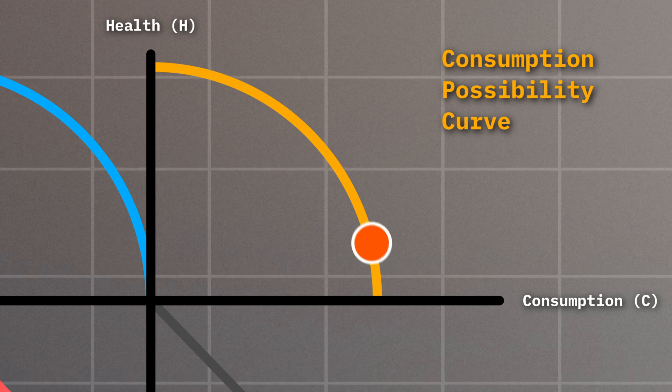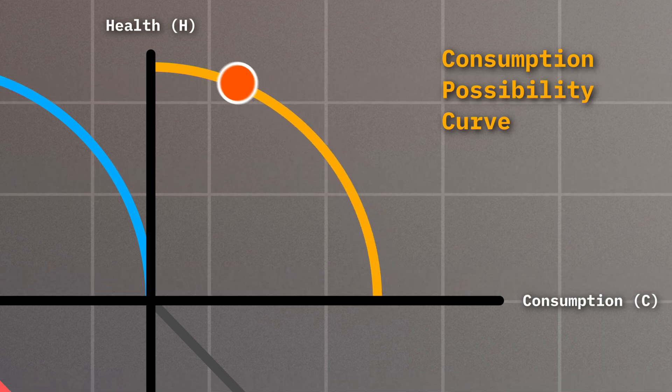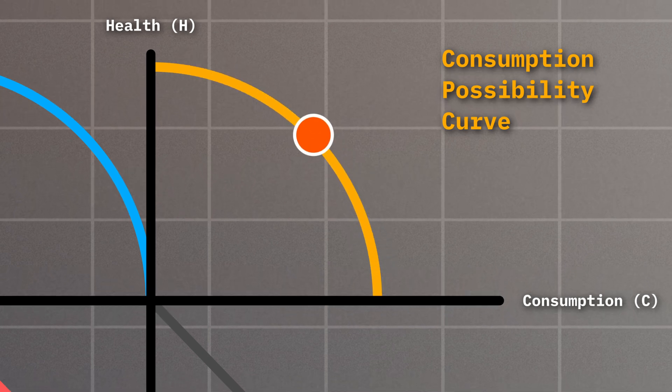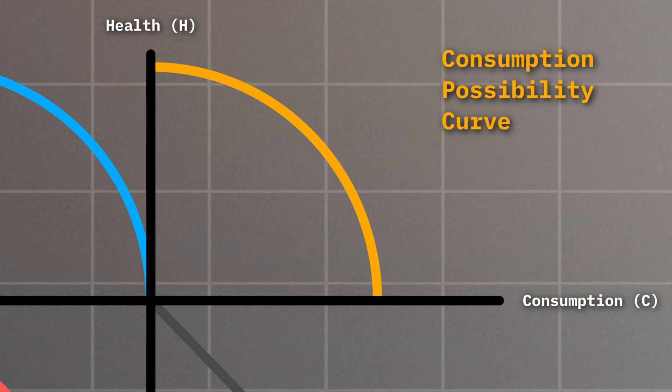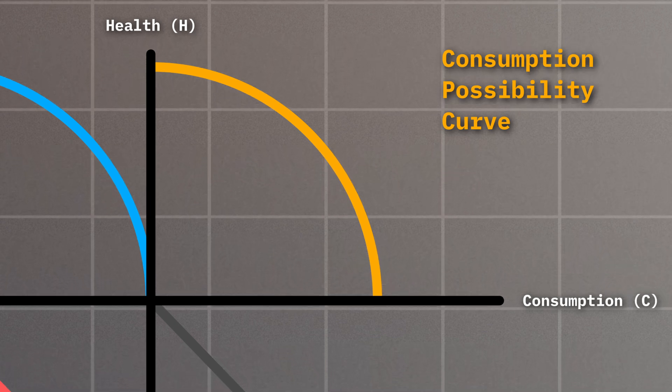In quadrant one, we can move along the consumption possibility curve, which acts as a consumption boundary. Think of consumption as a composite outcome, so all the things you could possibly consume, while health is an outcome that reflects how healthy you are.